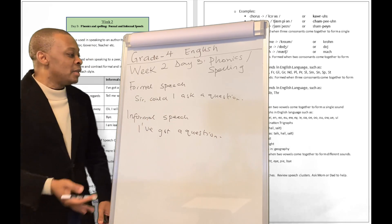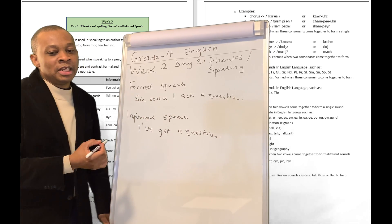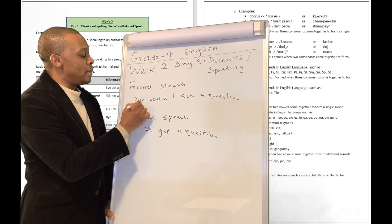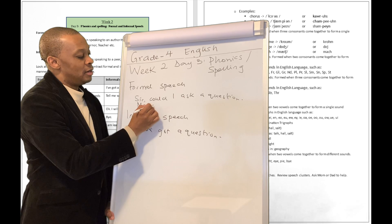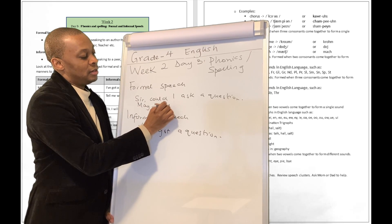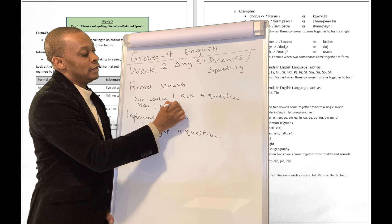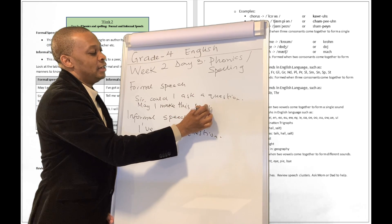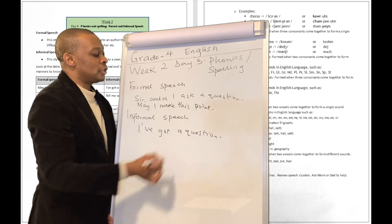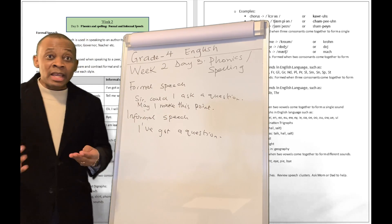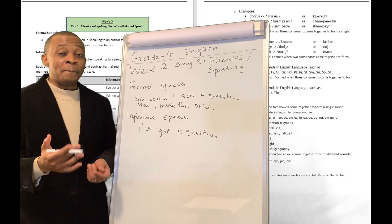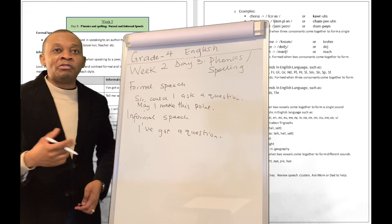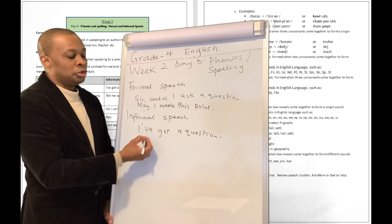So formal speech is really important. Another example of a formal speech is you can say: may I make this point? So you want to talk to an authority, you can use the word may. May I ask for a favor. May I ask you please to do this for me. That's talking in a formal speech style.